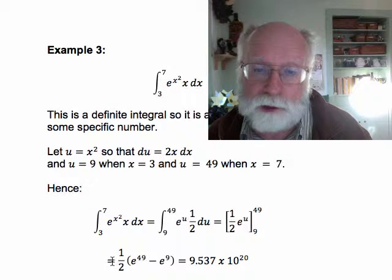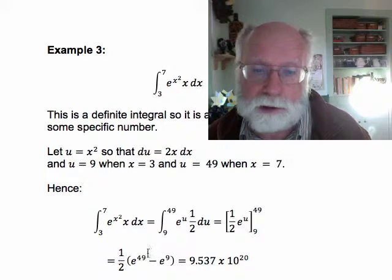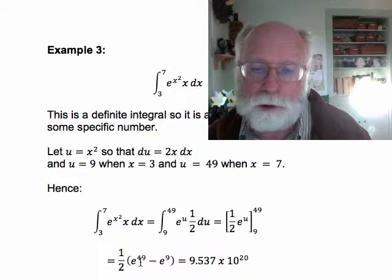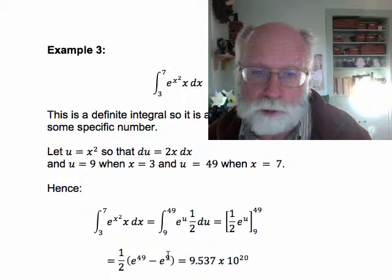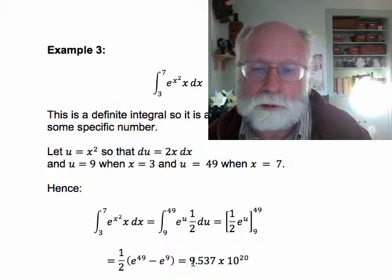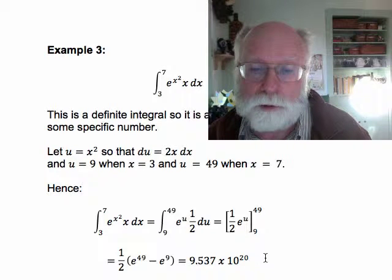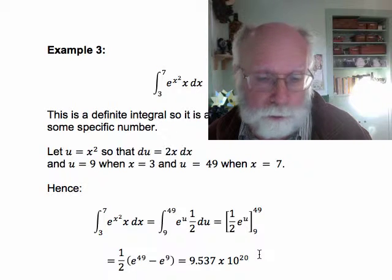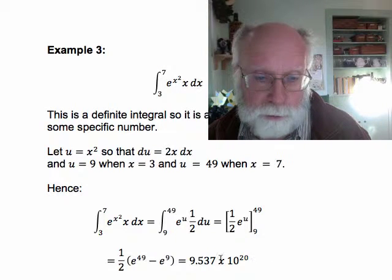We factor out 1 half because that's common to both terms and we get 1 half times (e to the 49 minus e to the 9). If you use your calculator you can calculate that that is 9.537 times 10 to the 20th approximately. So it's a very big number.